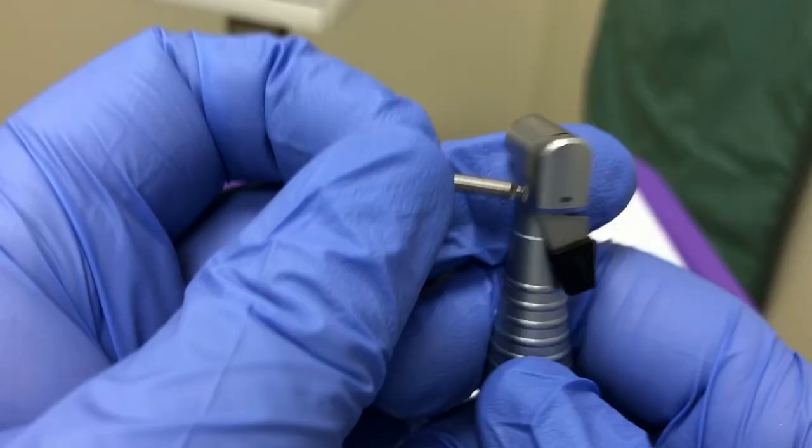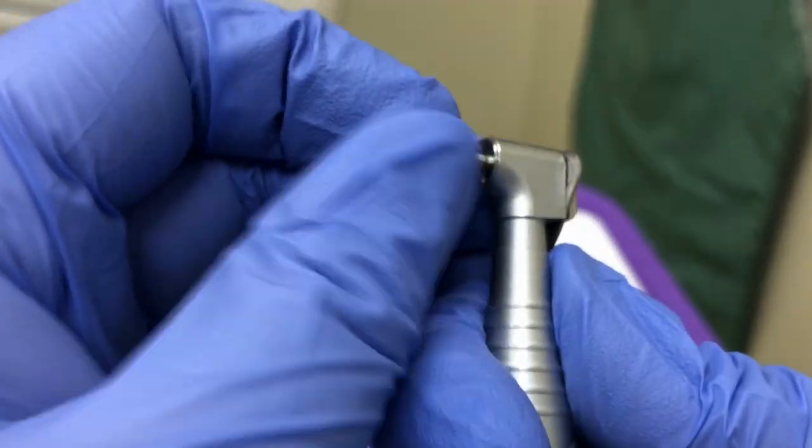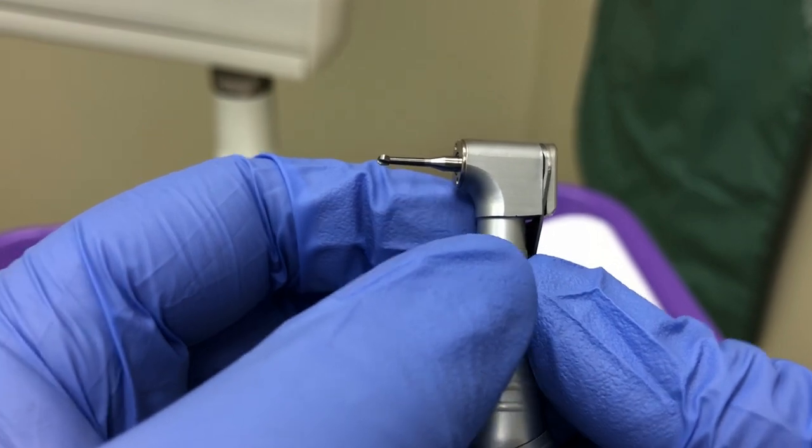To open the locking mechanism, swing the piece on the back of the handpiece. Fully insert the burr into the handpiece. Once it is in, lock your handpiece.